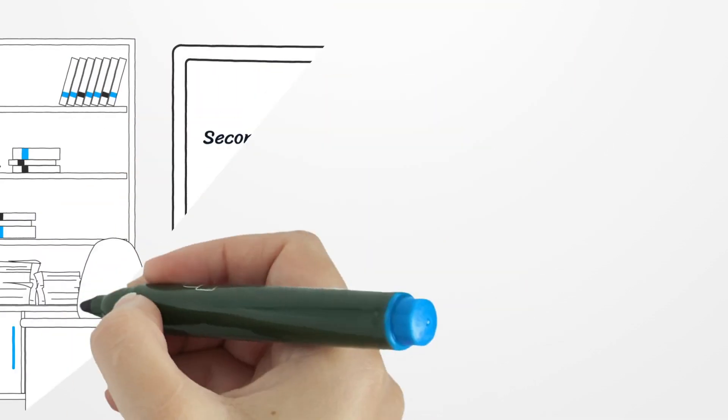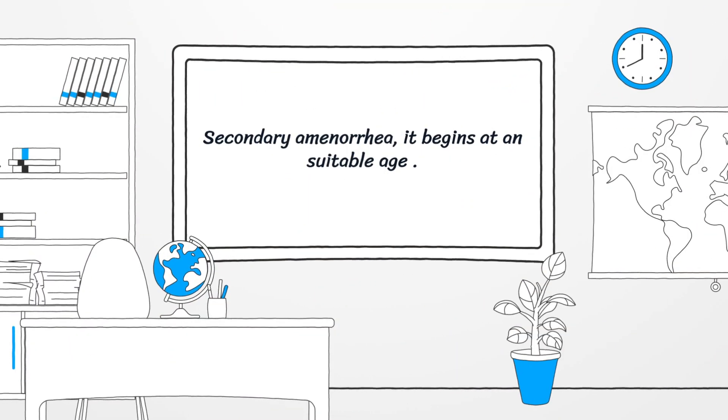With secondary amenorrhea, it begins at an appropriate age but later ceases for three or more months in the absence of normal physiologic causes such as pregnancy, lactation, or menopause.